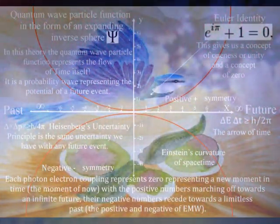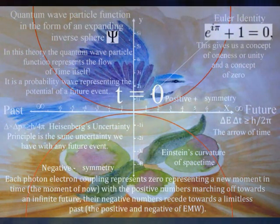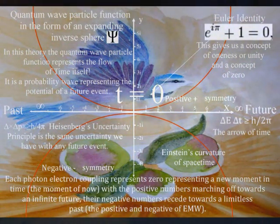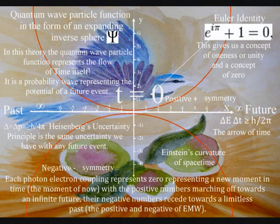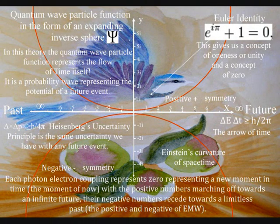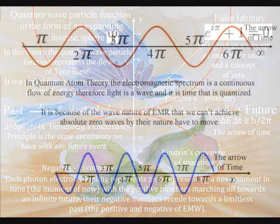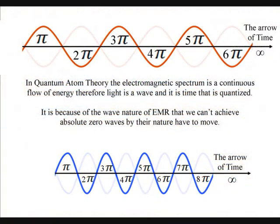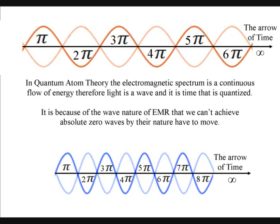Re-gauging represents a new moment in time, the moment of now, with the positive numbers marching off towards an infinite future, the negative numbers receding towards the limitless past—the positive and negative of electromagnetic waves.